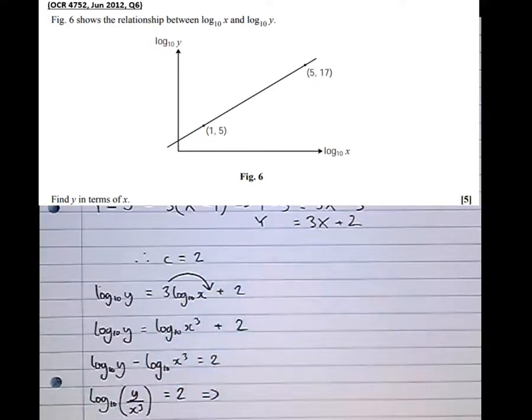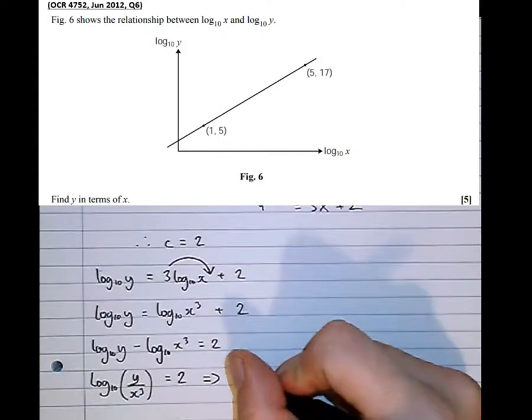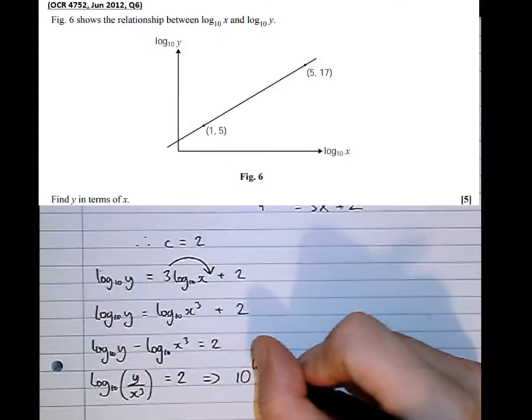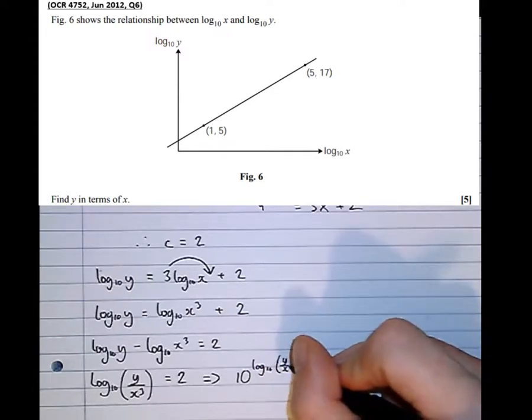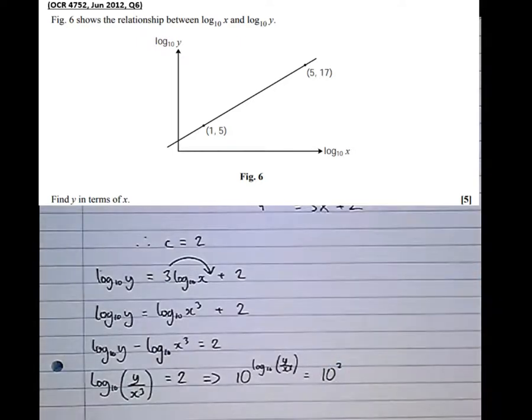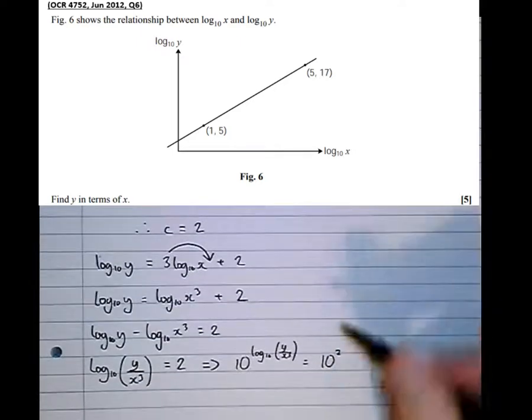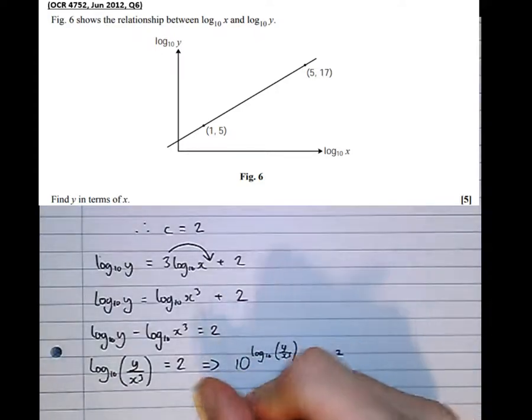And now I can do 10 to the power of both sides, which means that 10 to the log to the base 10 of y over x cubed equals 10 to the power of 2. I've done the same thing to both sides. I've made them a power of 10. And now that says what power do I have to give 10 to get y over x cubed? Then I go and give 10 that power to get y over x cubed.